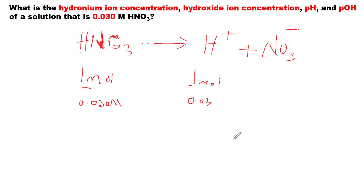So the hydrogen ion concentration is also going to be 0.03 molar. Because the mole ratio is 1:1, the concentration of the nitric acid and the hydrogen ion are the same. Therefore, the hydrogen ion concentration is 0.03 molar because the number of molecules of hydrogen ion are the same as the acid.